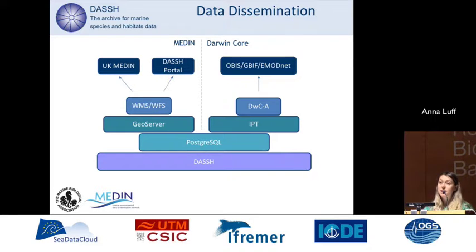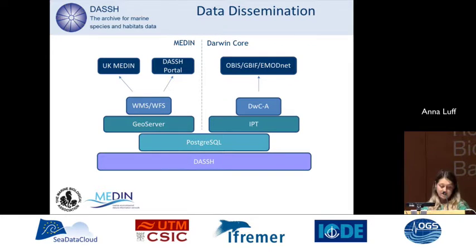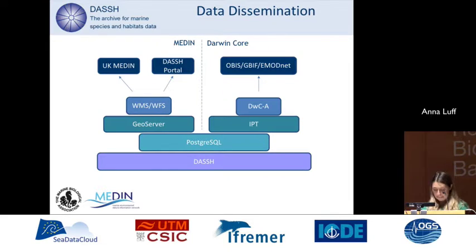Data disseminated in Darwin Core are published through our Integrated Publishing Toolkit, a software connected to our database that publishes a Darwin Core view of our database. These data are then made accessible via our IPT to OBIS, GBIF, and eModNet.